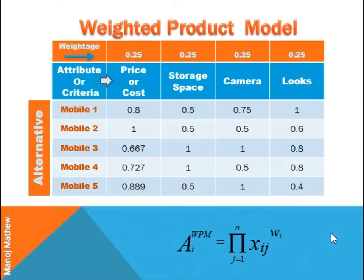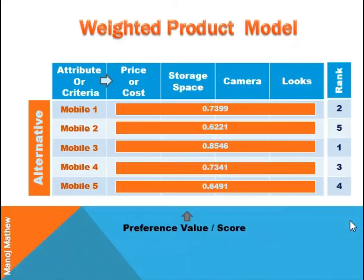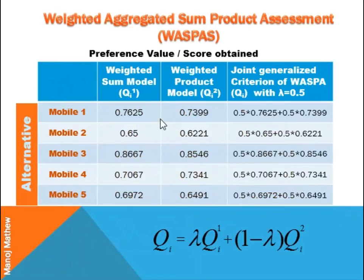This is the formula for preference value using the weighted product model. You can refer to my previous video to know how the preference value is calculated using WSM and WPM. This is the preference value and the corresponding ranks obtained using the weighted product model.